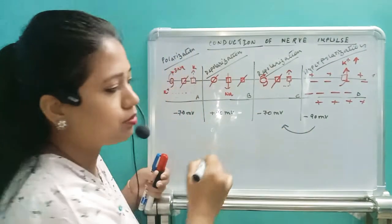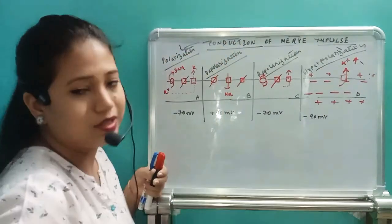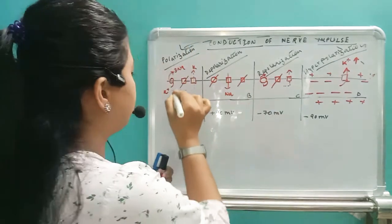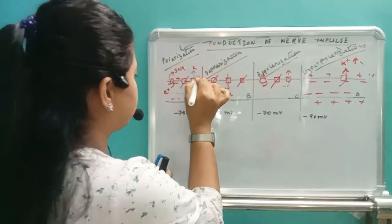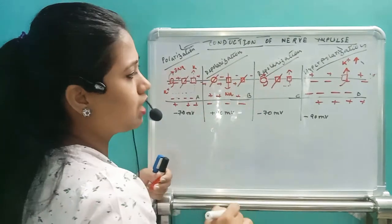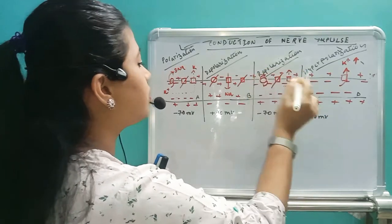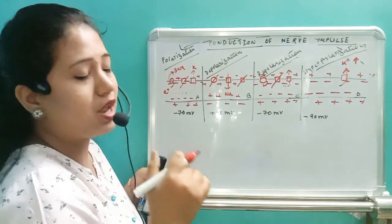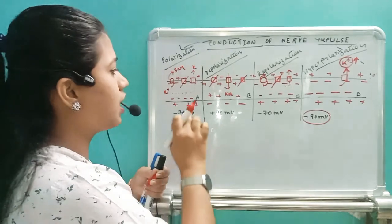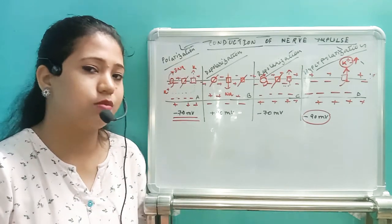Whenever hyperpolarization is attained, gradually the potassium ion voltage-gate channel starts to close. So it comes back from hyperpolarization to the state of polarization once again. After hyperpolarization, it returns to polarization. In polarization, we have negative charge inside and positive charge outside. At depolarization, we develop positive charge inside and negative charge outside. At repolarization, negative charge inside and positive charge outside develop again. Due to the constant opening of the potassium ion channel, hyperpolarization occurs, and then it comes back to polarization.